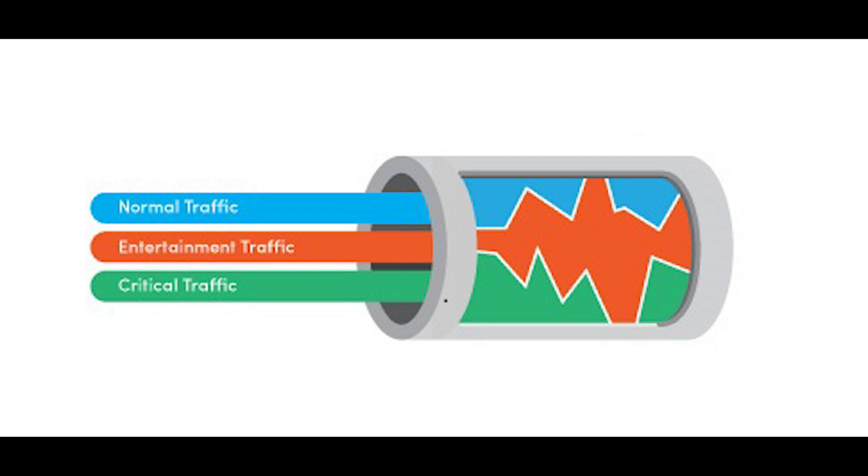Traffic shaping basically establishes priorities for data traveling to and from the internet and within the network. Packet shaper essentially performs two key functions: monitoring and shaping.